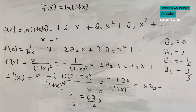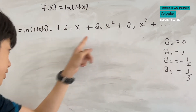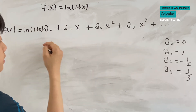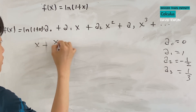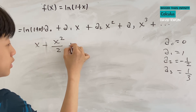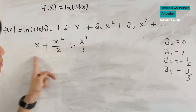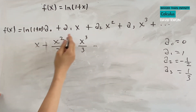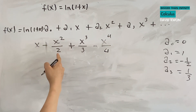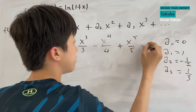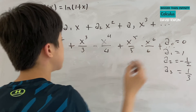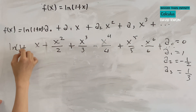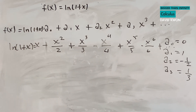So our Maclaurin series for ln(1+x) is found by putting all the coefficients together. Since a₀ is zero, we get x minus x² over 2 plus x³ over 3. From here we can see the pattern: alternating signs with the power increasing by one, and the power equaling the denominator. So the series continues minus x⁴ over 4 plus dot dot dot. This is the Maclaurin series for ln(1+x). If you want to find the value of ln(2), just substitute x equal to 1, and you get an approximation.